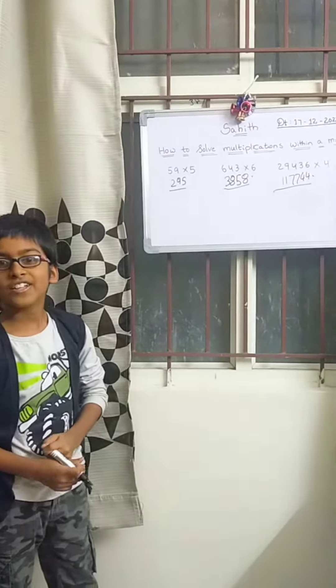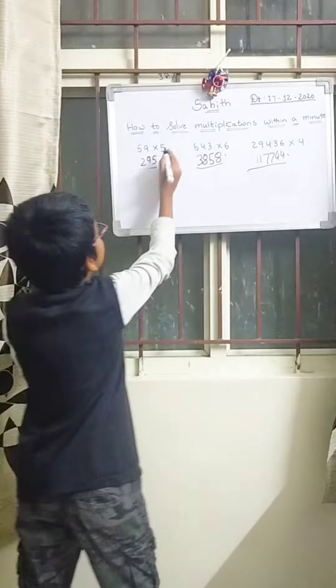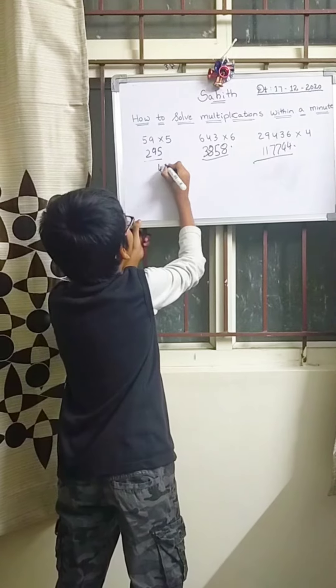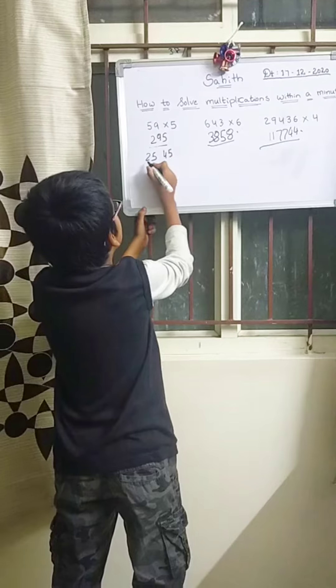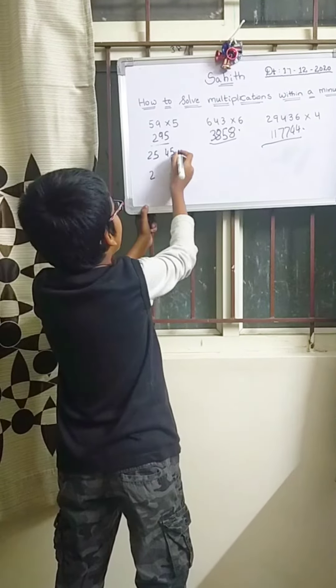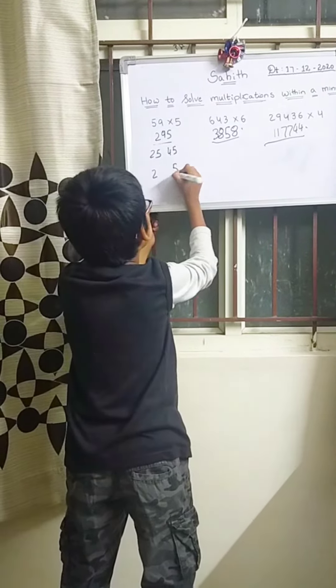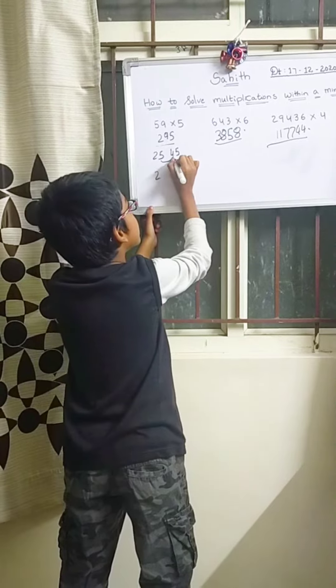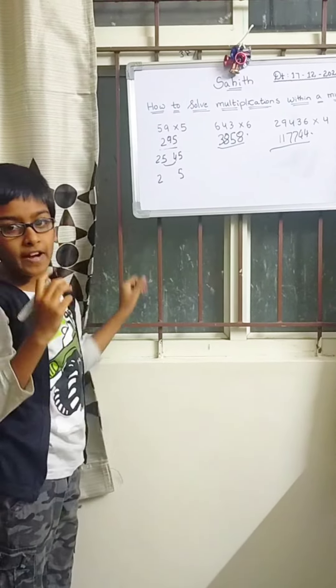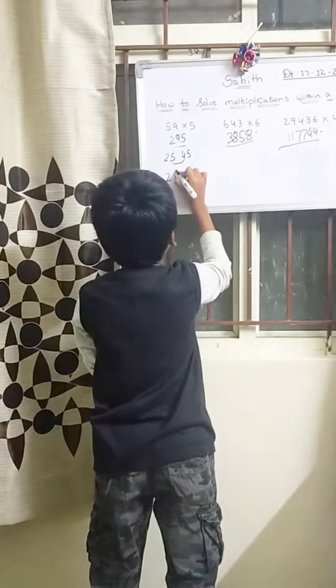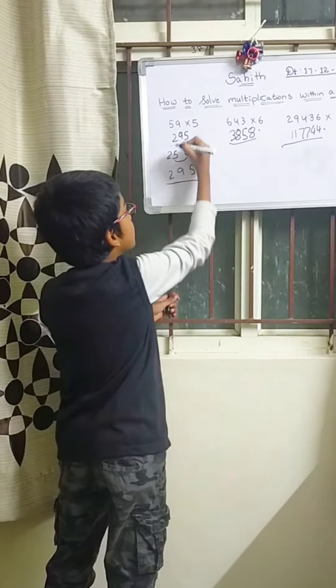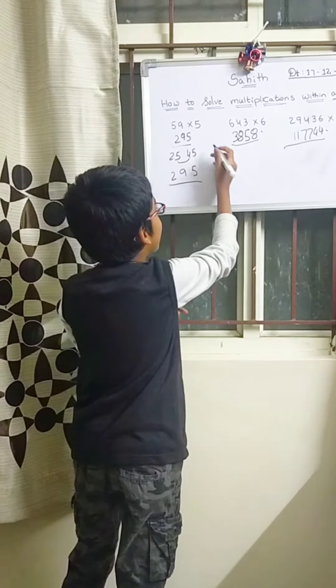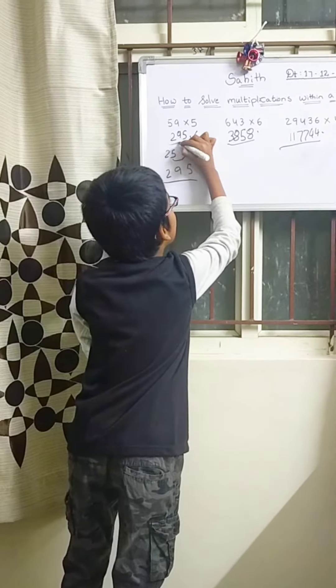Can you explain? Of course. 5 nines are 45. 5 fives are 25. Now let's take 2 down and 5 down. Now let's cross these both. 5 plus 4 is 9. You can check the answer with the one above: 295.